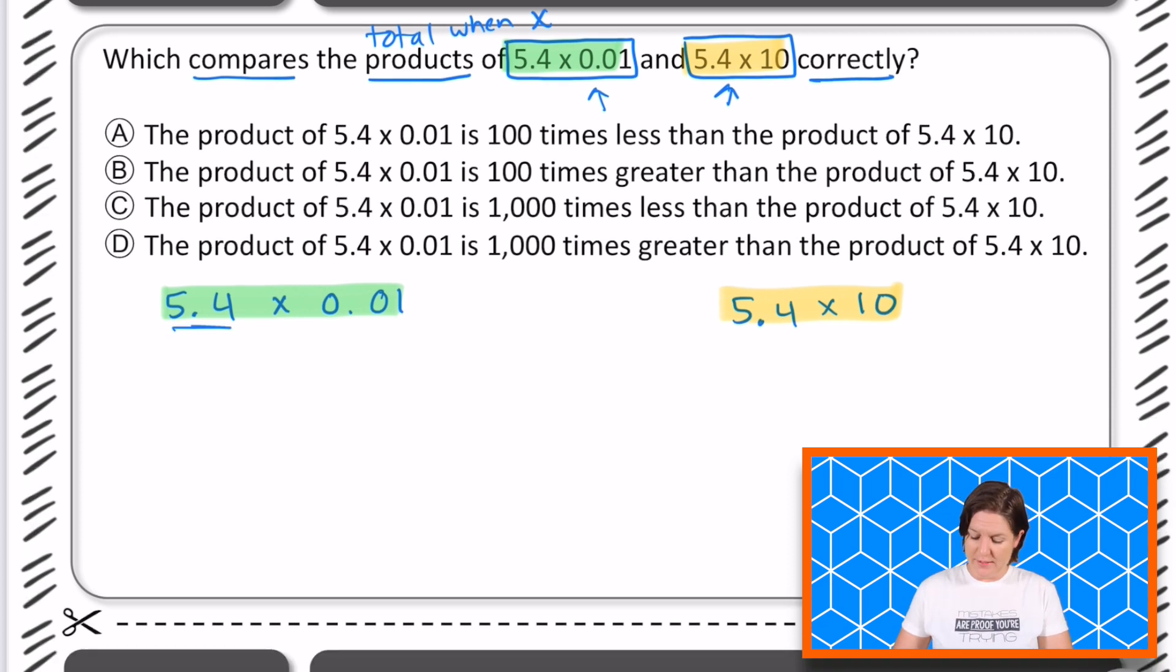Here what that means is if I'm putting it into a quick little place value chart. This is the ones place, which is where my five is. And the four is right here. Which place is that four in? The tenths place. Okay, then next we have the hundredths and the thousandths. And it does keep going on. But we usually stop right there.